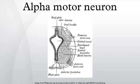Diseases that impair signaling between alpha motor neurons and extrafusal muscle fibers — namely diseases of the neuromuscular junction — have similar signs to those that occur with alpha motor neuron disease. For example, myasthenia gravis is an autoimmune disease that prevents signaling across the neuromuscular junction, which results in functional denervation of muscle.